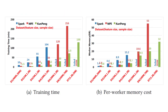In our experiments, we show that with different sizes of data and features, Kun Peng has much better performance in both speed and memory cost compared with Spark and MPI. In some cases, Spark or MPI will run out of memory or directly fail due to too large sets of features and data.